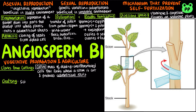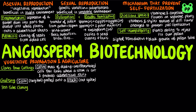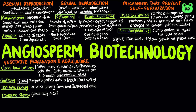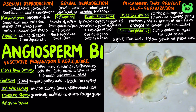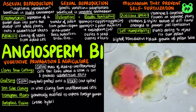During grafting, a scion, which could be a twig or a bud, can be grafted onto a stalk, which provides the root system from a closely related species or variety. Scientists can also perform tissue cloning of a whole plant from undifferentiated cells. They can also genetically modify plants to express foreign genes — these plants are known as transgenic plants. Finally, protoplast fusion is used to create hybrid plants by fusing protoplasts, which are plant cells with their cell walls removed.